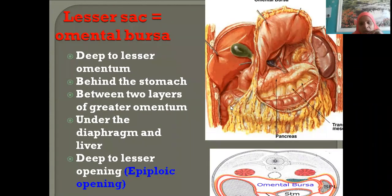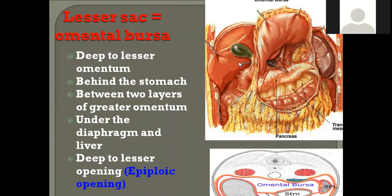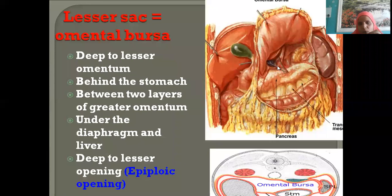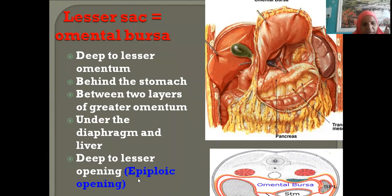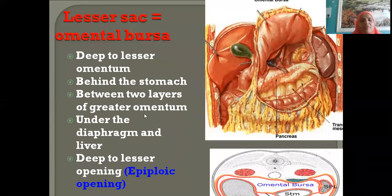The communication between the greater sac and lesser sac is the epiploic foramen. A probe is passed here to show the continuity of greater sac and lesser sac at this opening — the epiploic foramen. The lesser sac is deep to the lesser omentum, behind the stomach, between the two layers of the greater omentum.